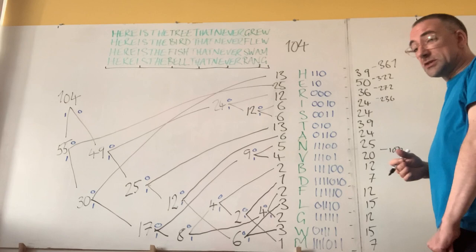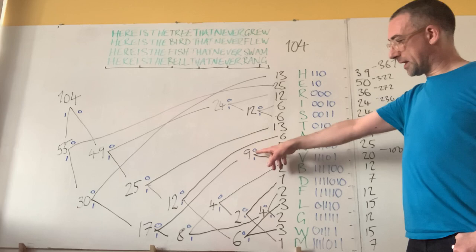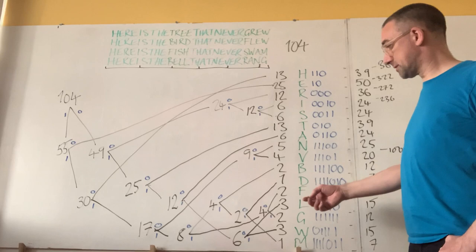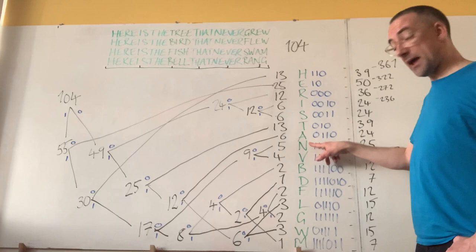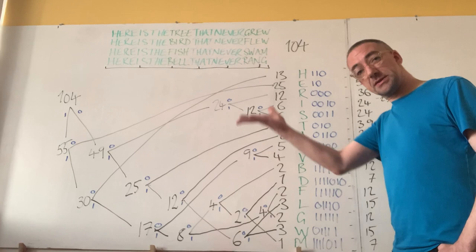But have we done it right? Well, here's another way to figure it out. We said that the number labeling each fork in the tree is the number of times we use that bit. We're going to spend 9 bits of the message telling N apart from V. So what we have to do is add up all the numbers that label forks in the tree. And that will tell us all the bits that get used in the message.